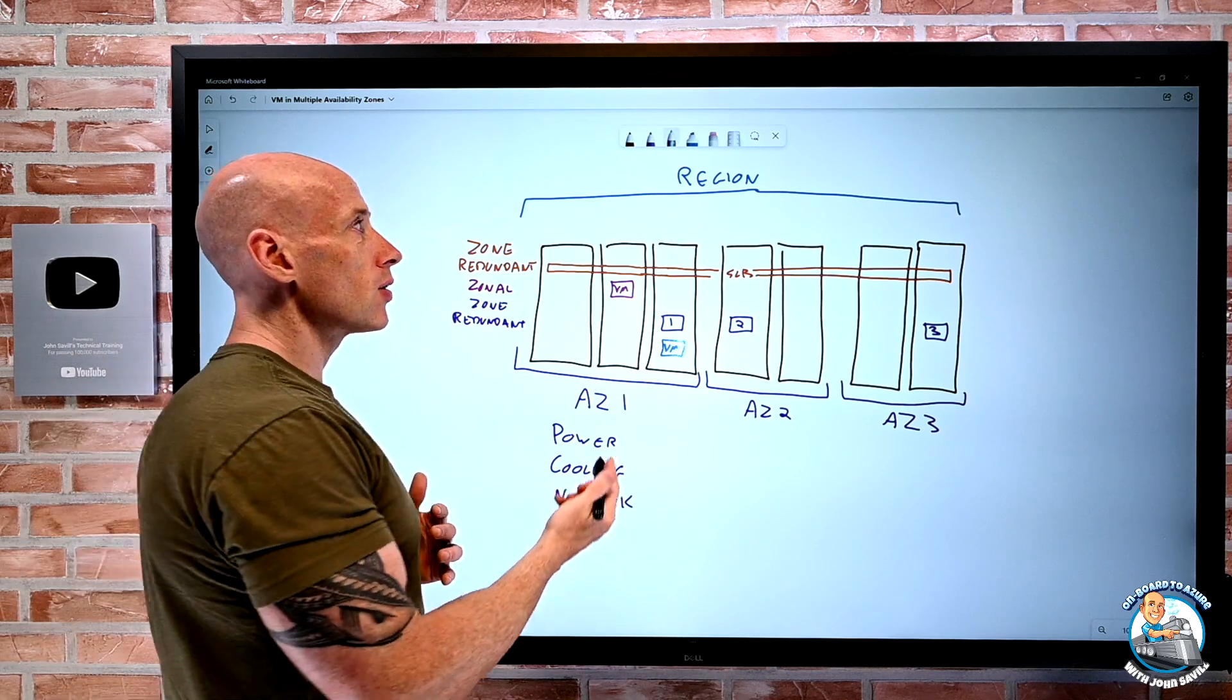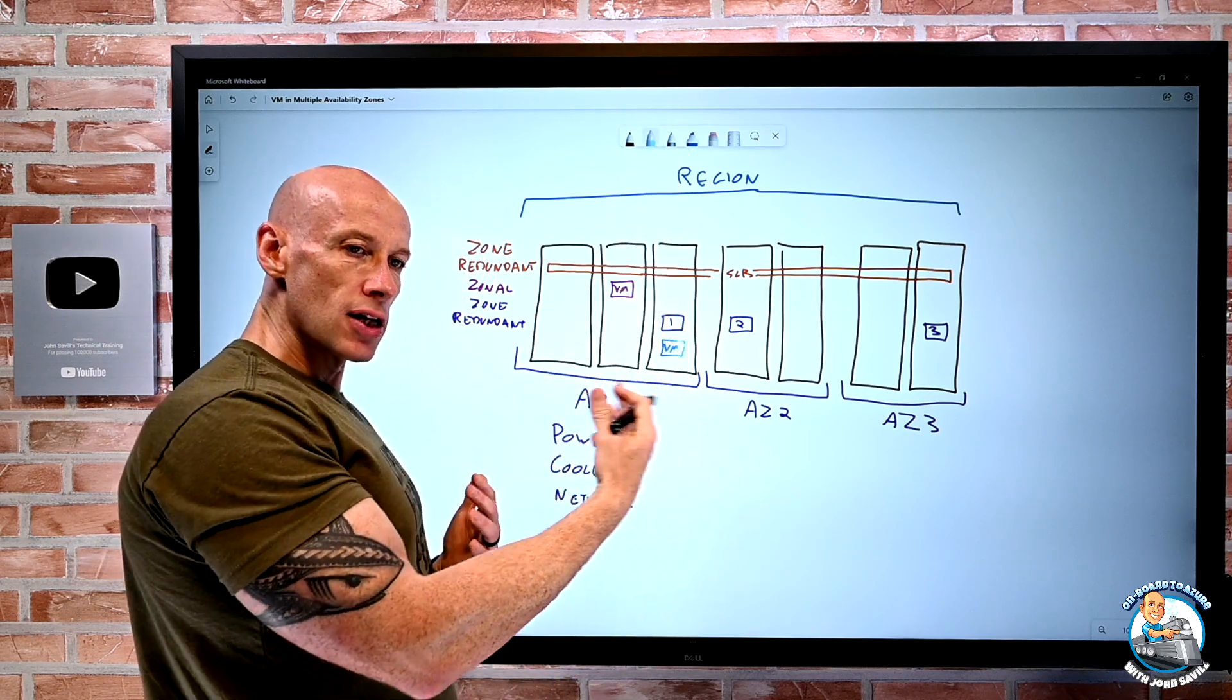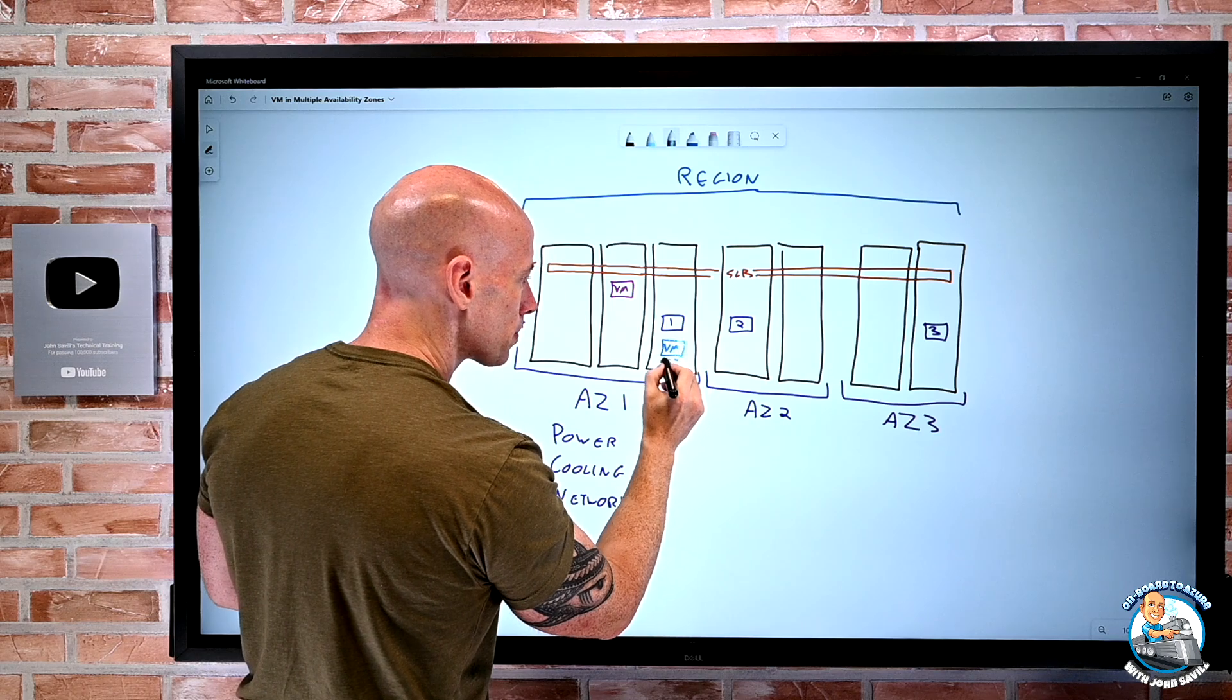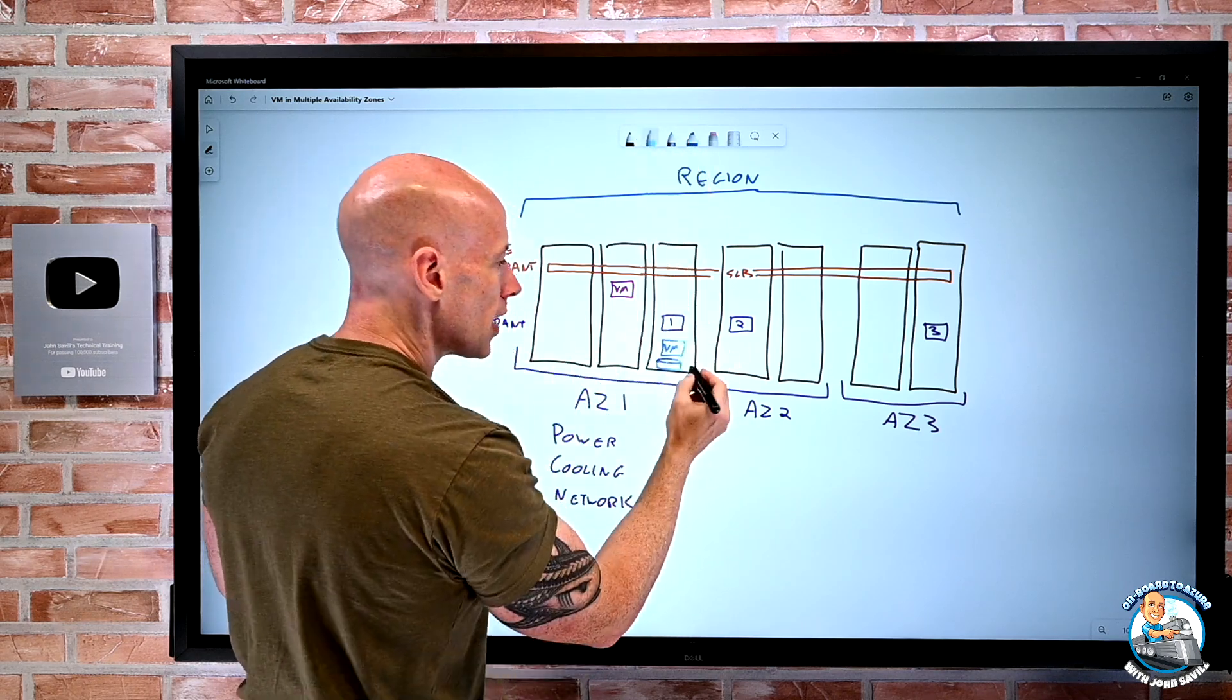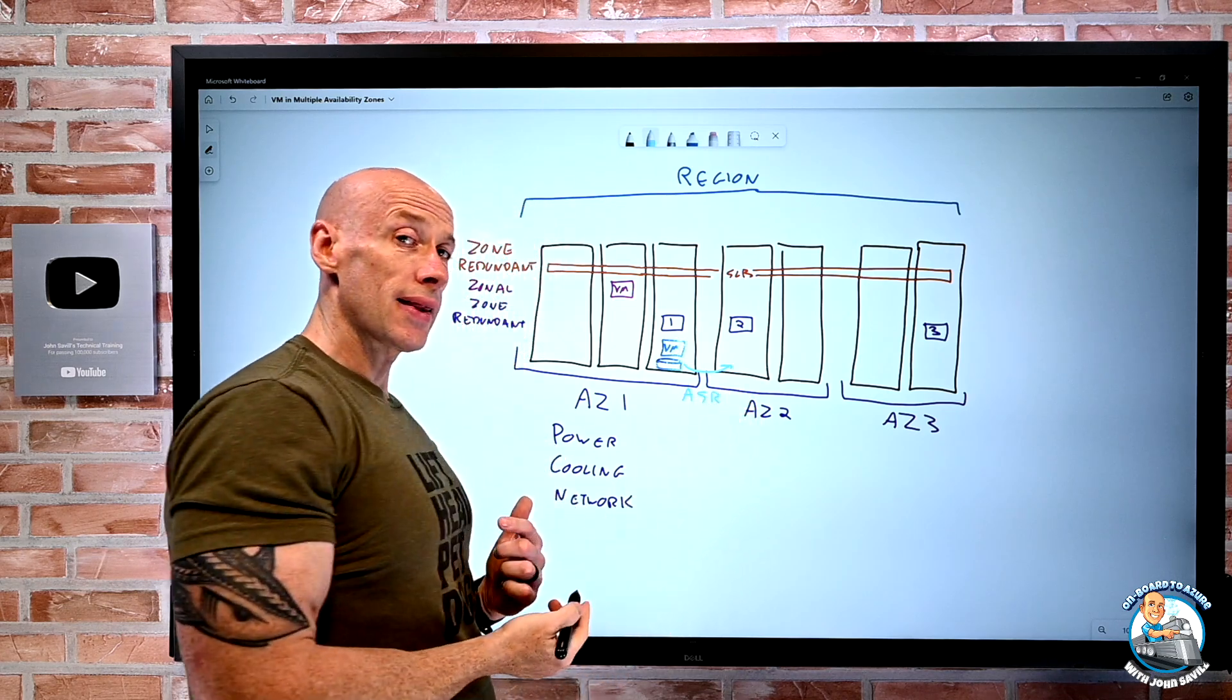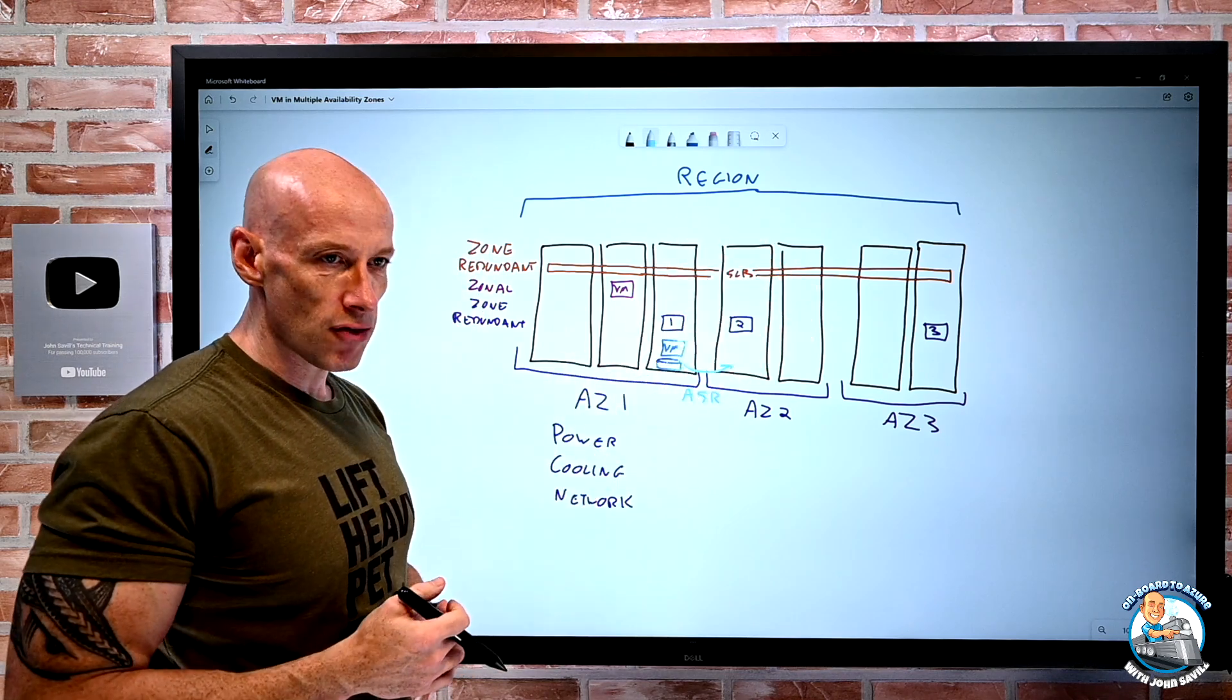You can now replicate to another zone in the same region. So, absolutely, if you think behind the scenes, this has its storage. So, it's using a managed disk. One option I could be doing here is with Azure Site Recovery, replicate that. So, then if there was a problem in this zone, hey, I could very easily spin it up, start it up in another zone.